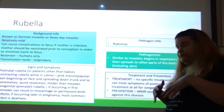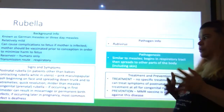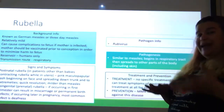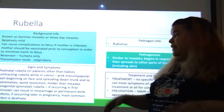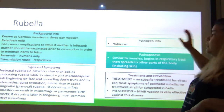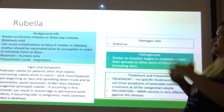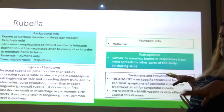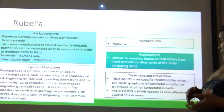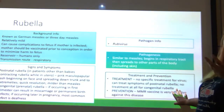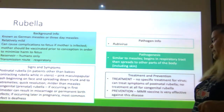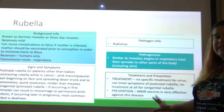Congenital rubella occurring in the first trimester can result in miscarriage or permanent birth defects. Past the first trimester, the most common symptom seen is deafness. The pathogen is Rubivirus. Pathogenesis is similar to measles — it begins in the respiratory tract, spreads to other parts of the body including the skin. There is no specific treatment for the virus. You can treat symptoms of postnatal rubella, but there is no treatment for congenital rubella — if you get it while pregnant, you just have to ride it out. Prevention is the MMR vaccine, which is very effective.